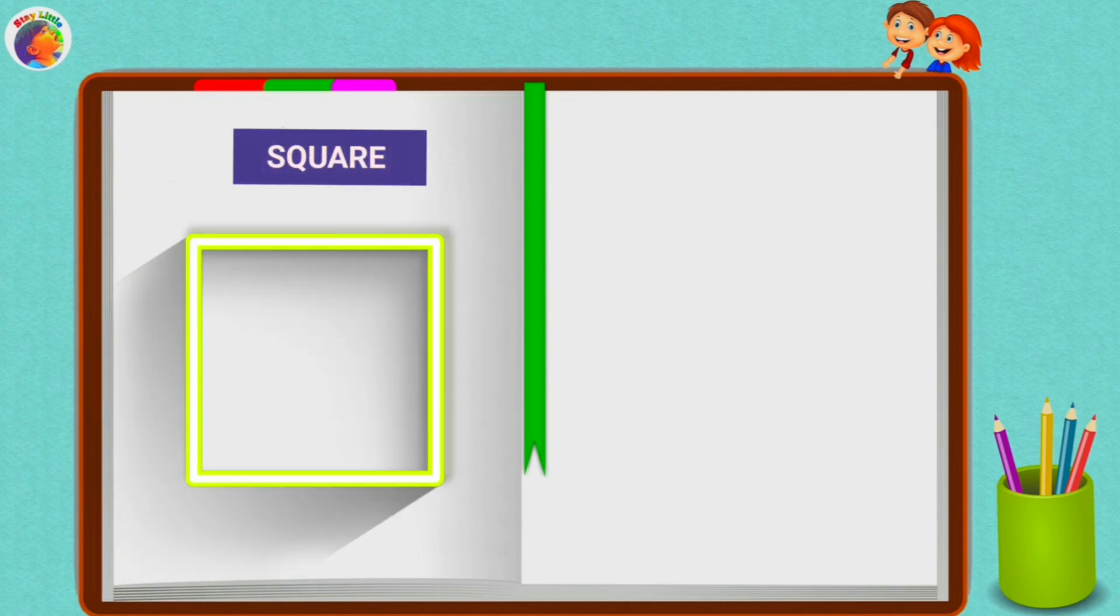Square. A square has four sides. 1, 2, 3, 4. And four corners.